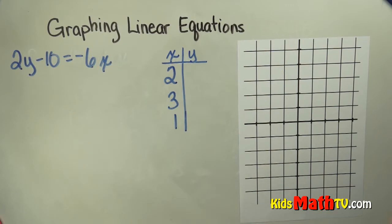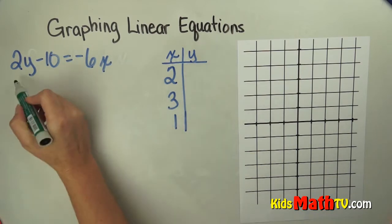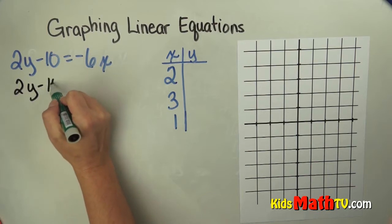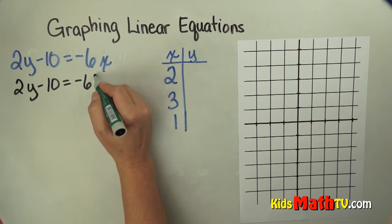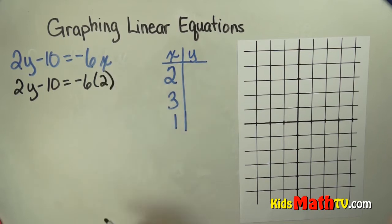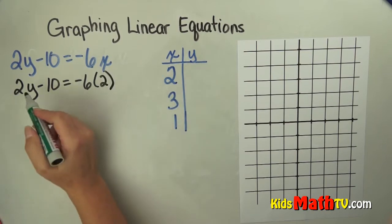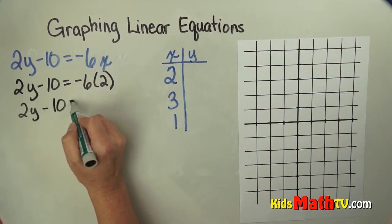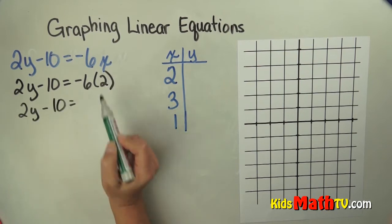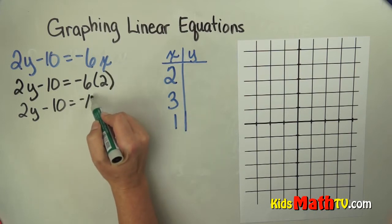The first thing I will do is substitute 2 for x. So I'll rewrite it: 2 times y minus 10 equals negative 6 times x, which is now 2. Now I solve for y. We have 2y minus 10 equals negative 6 times 2, which is negative 12.